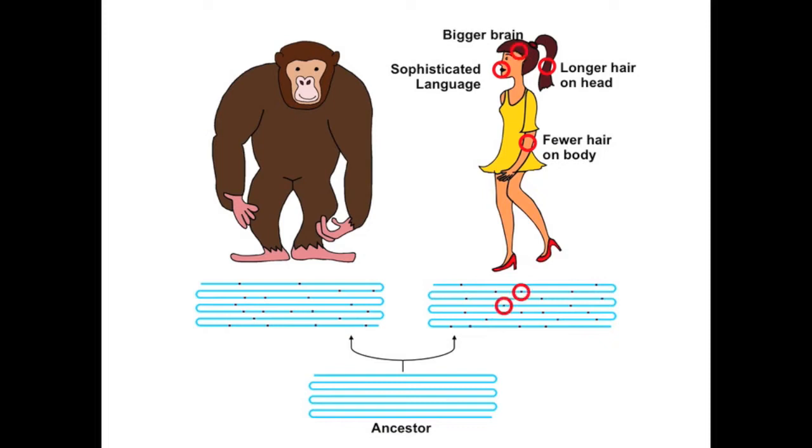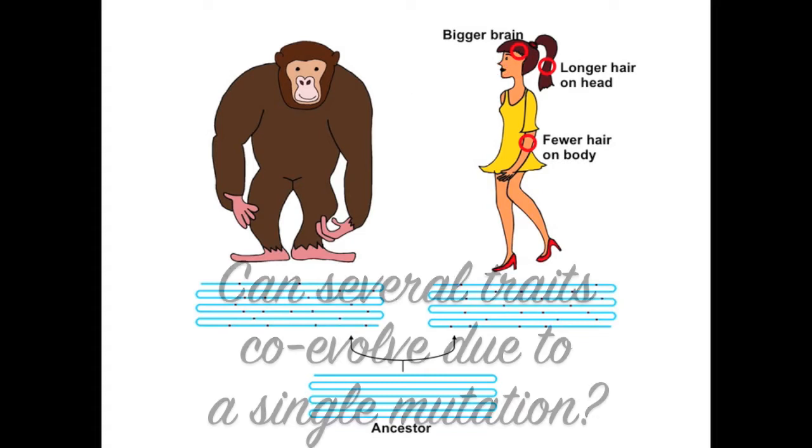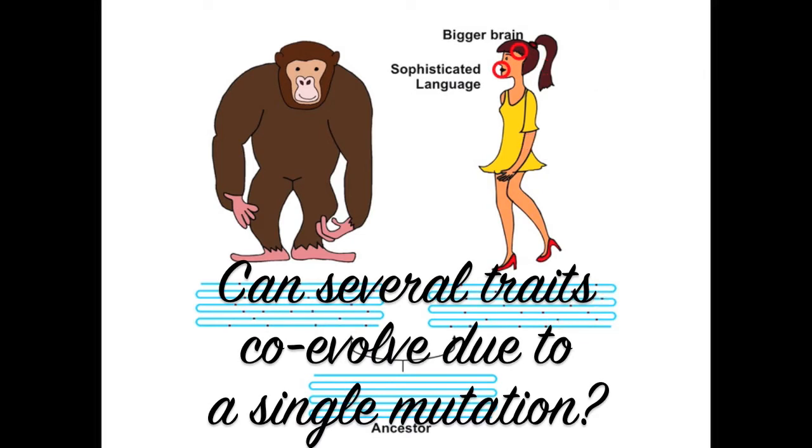It's commonly thought that each species-specific trait evolved independently through independent mutations. However, it is unclear whether several traits might co-evolve all at once due to a single mutation in the DNA.